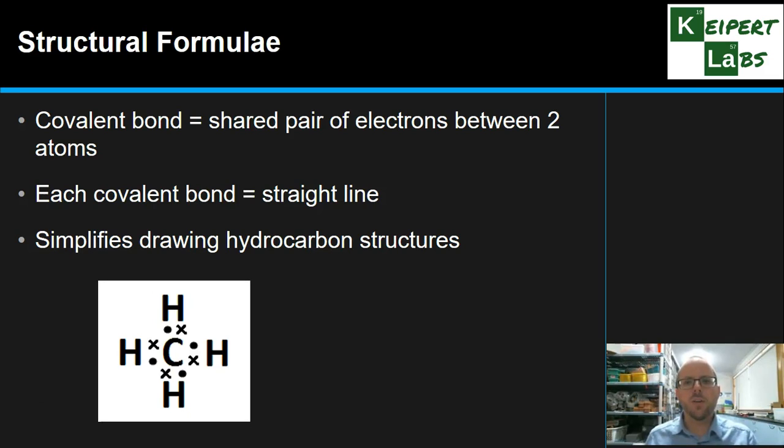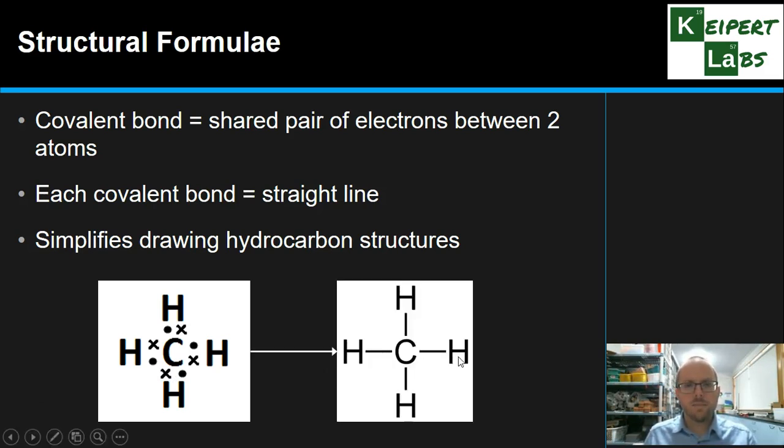So in the past, we've looked at Lewis diagrams like this, where the dot and the cross represent the electron that comes from the hydrogen and the carbon respectively. And so that's that shared pair. So for every one of those pairs, the four pairs that are there, we would write a straight line. You can see it's a lot neater. It's a lot simpler. And then starting from something like this, which is a very small molecule, we can build it up into bigger ones without drawing millions of dots and crosses.